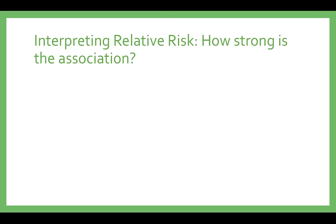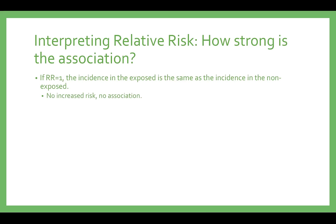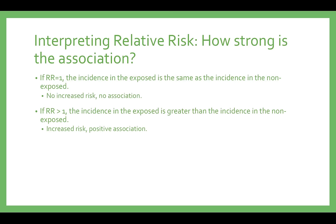Relative risk provides a single number ranging from 0 to infinity and there are three resulting interpretations. When interpreting the relative risk, we consider 1 to be null. A relative risk of 1 means there is no difference between the two groups — the incidence and risk in the exposed is the same as the risk and incidence in the non-exposed; there is no increased risk and no association. If the relative risk is greater than 1, the incidence in the exposed is greater than the incidence in the non-exposed. There is a positive association or detrimental effect, also known as a risk factor, of being exposed to the stimulus.